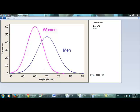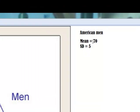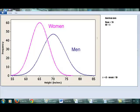Now with this data in hand, let's assume the mean, the average height for American men is 70 inches, and the standard deviation SD is 5 inches.